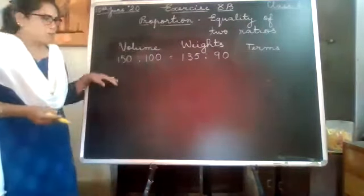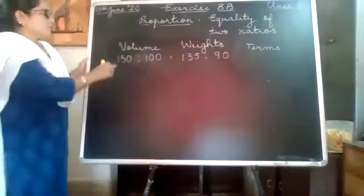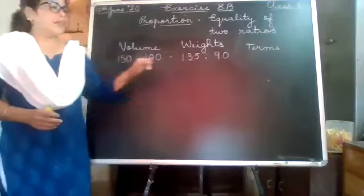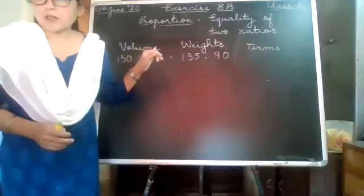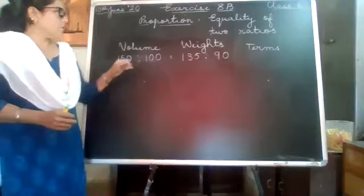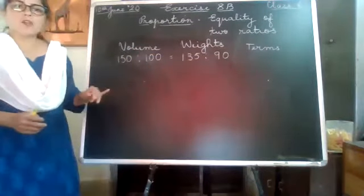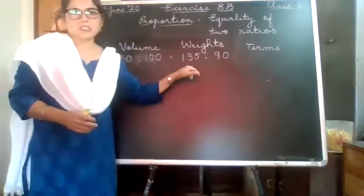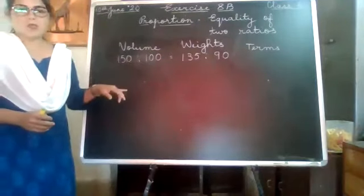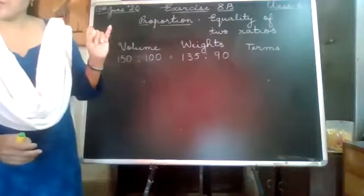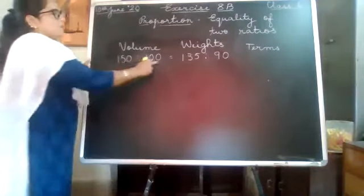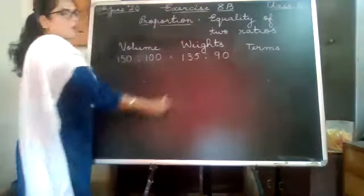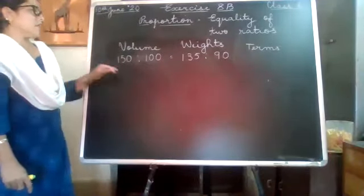Similarly, in proportion we don't have four separate names, but the terms at the extreme ends are called extremes or extreme terms. And the terms which are inside — meaning the second and the third term — are called means or middle terms. So these two are called extremes and these two are called means.